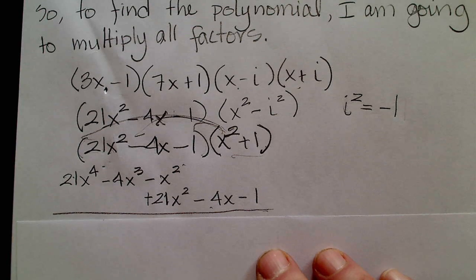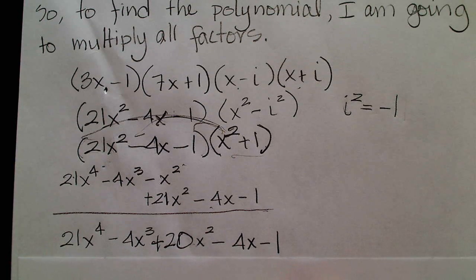And I end up with, and I'm going to line them up this way to make it easy on myself. So now I combine like terms and I end up with 21 x to the fourth minus 4x cubed plus 20 x squared minus 4x minus one.